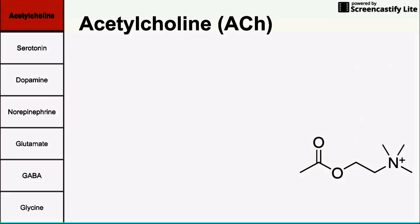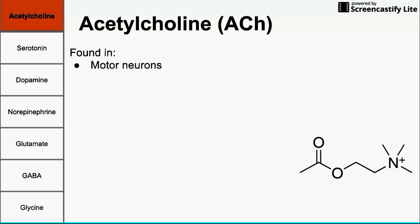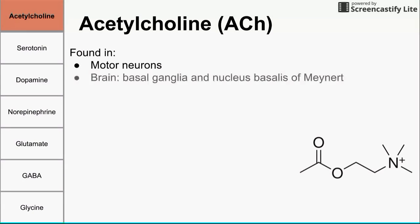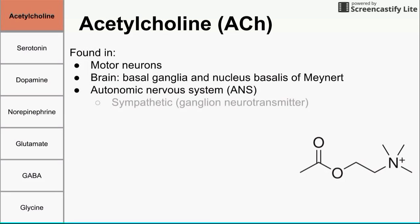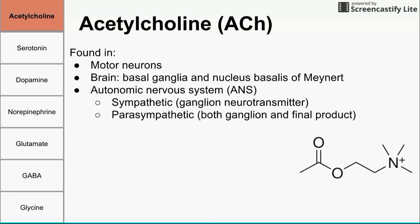Let's start with acetylcholine, often abbreviated ACh. We can see its structural formula here. Acetylcholine is found in motor neurons, meaning we see it at the neuromuscular junction. It's also found in the brain, specifically in the basal ganglia and the nucleus basalis of Meynert. It's used in the autonomic nervous system — in the ganglia of the sympathetic nervous system, as well as the ganglia and final end target of the parasympathetic nervous system. So acetylcholine is used as the neurotransmitter at ganglia for both sympathetic and parasympathetic, and at the post-synaptic neuron in the parasympathetic.